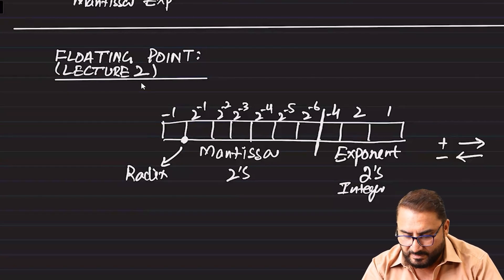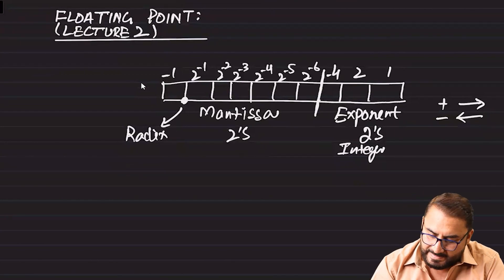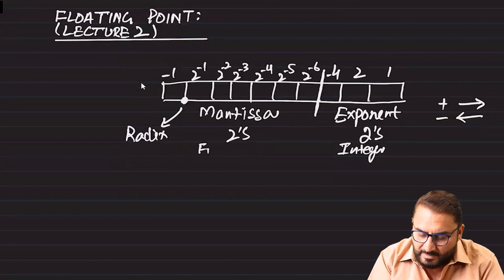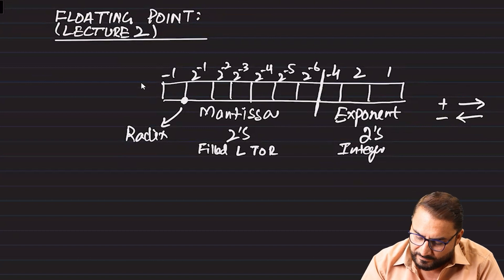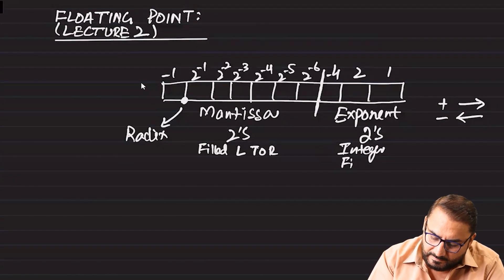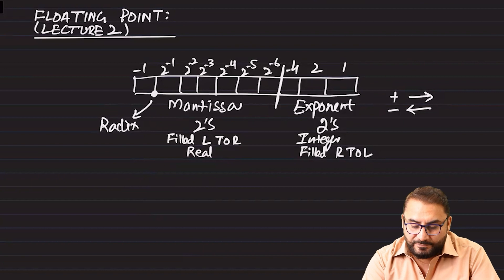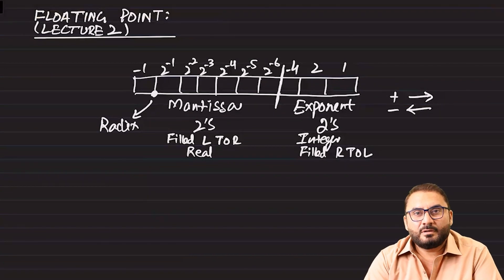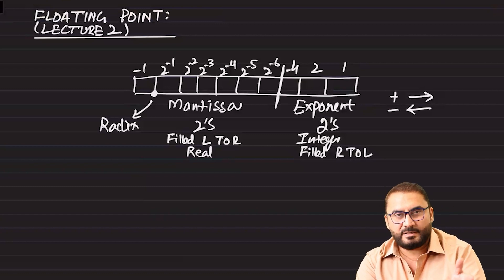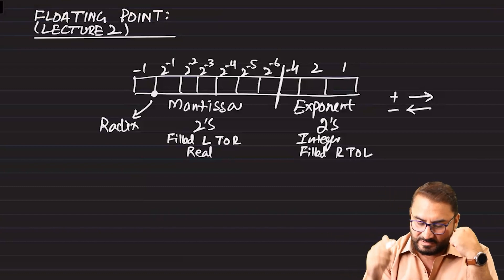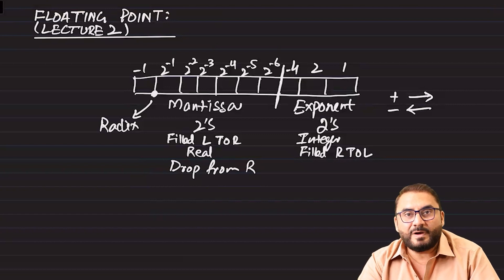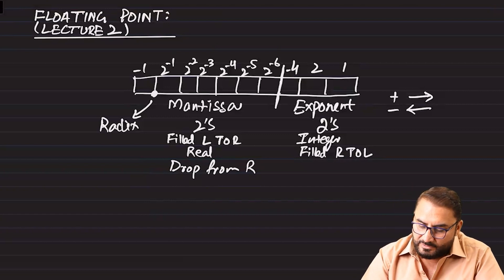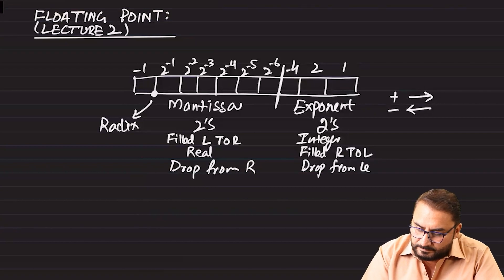Since mantissa is in two's complement, a leading 1 would indicate a negative sign, giving negative 1, negative 0.5, and so on. Mantissa is filled left to right, and exponent is filled right to left. When mantissa is filled left to right and we have more bits to fill but less space, the bits will drop from the right. Similarly, exponent is filled right to left and will drop from the left.